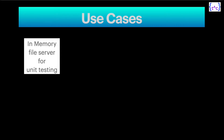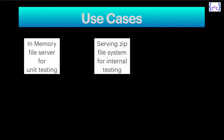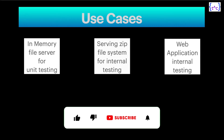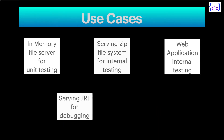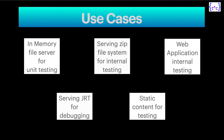Now let's talk about the use cases of Simple Web Server. First, it is an in-memory file server for unit testing. Second, it will serve a zip file system for internal testing. Third, it can be used for web application internal testing. Fourth, for debugging testing it can serve the entire JRT. Overall, it serves static content for testing purposes.